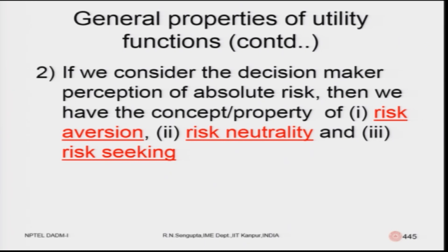The second property concerns the decision maker's perception of absolute risk. A person can be risk averse — wanting to run away from risk; risk neutral — indifferent to whether risk is increasing or decreasing; or a risk seeker — running towards risk to take more and more of it. This depends on the individual's risk and return profile, arising from non-satiation and the concept of risk property.